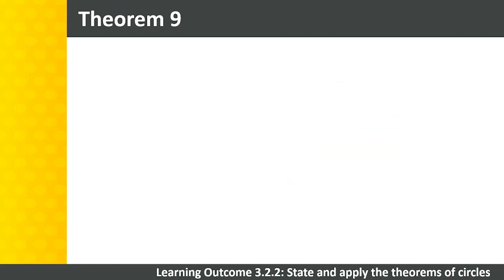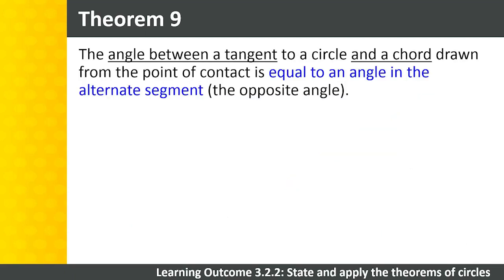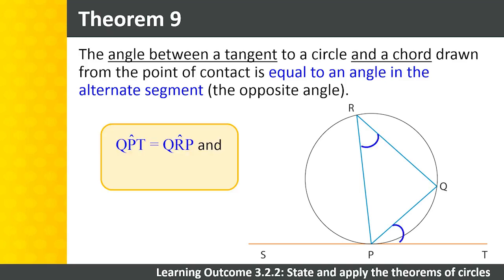Theorem 9 states that the angle between a tangent to a circle and a chord drawn from the point of contact is equal to an angle in the alternate segment, the opposite angle. In this diagram, we have tangent ST and chords RP and QP. We can conclude that angle QPT equals angle QRP, and angle RPS equals angle RQP. The abbreviation to use for this theorem is tan chord.